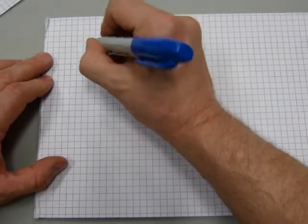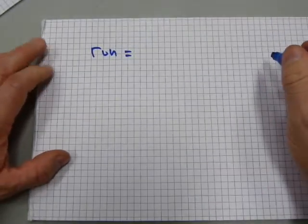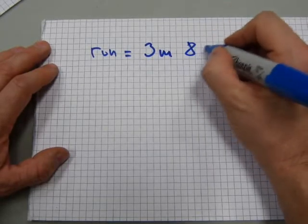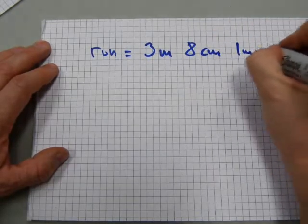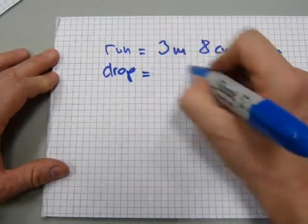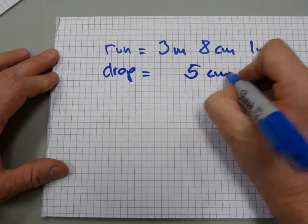Let's do one in metric, double click. In metric, a run is given. For example, 3 meters, I don't know, 8 centimeters and 1 millimeter. And there's a drop as well. You know what? We just measured the 5 centimeters.